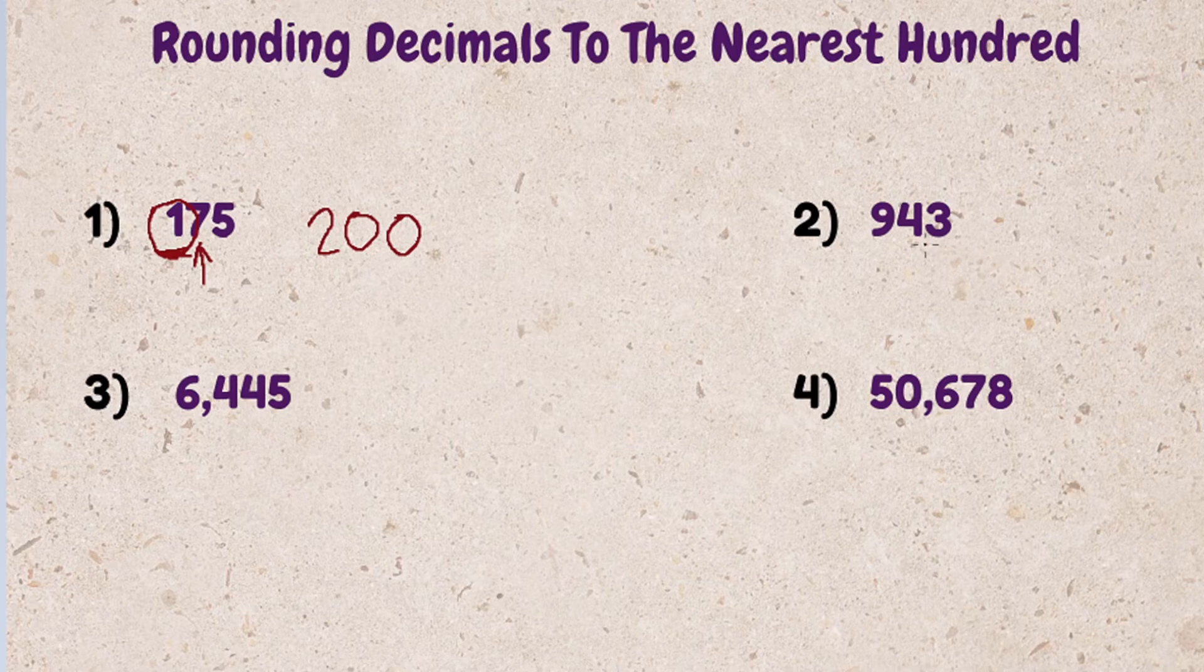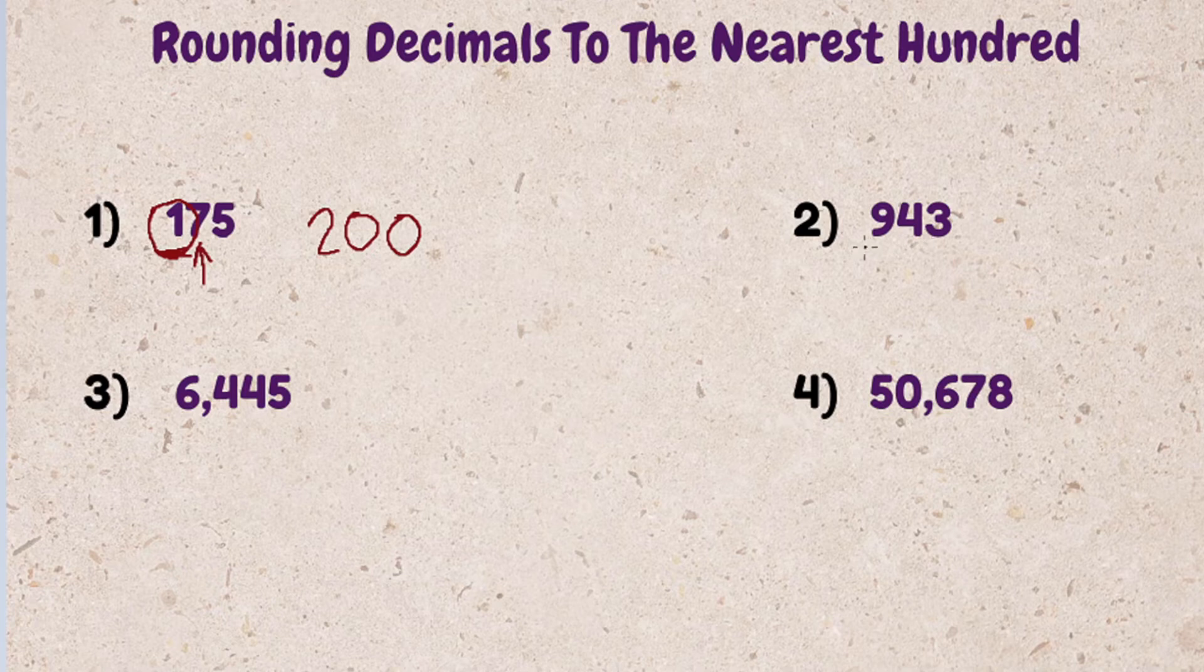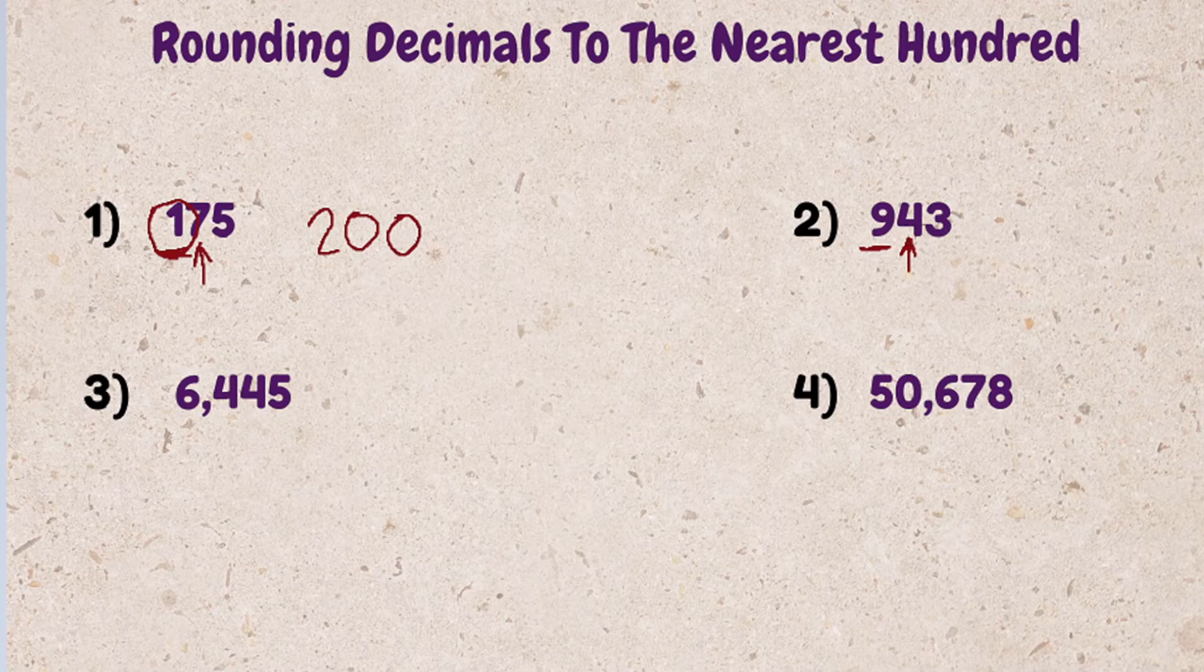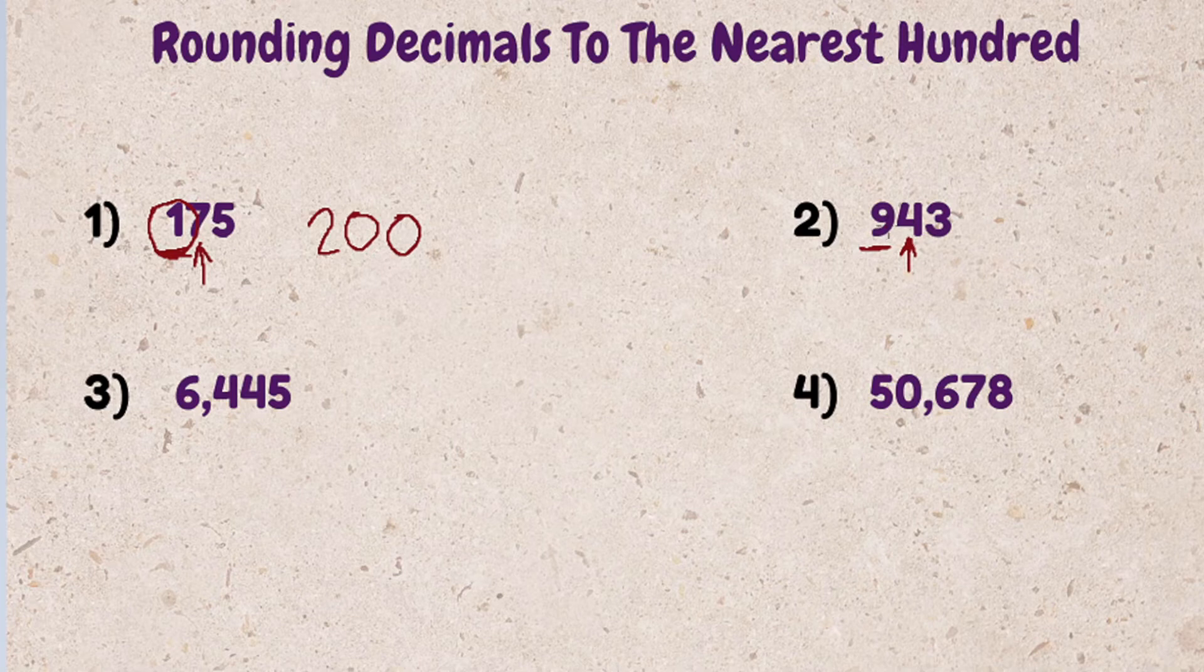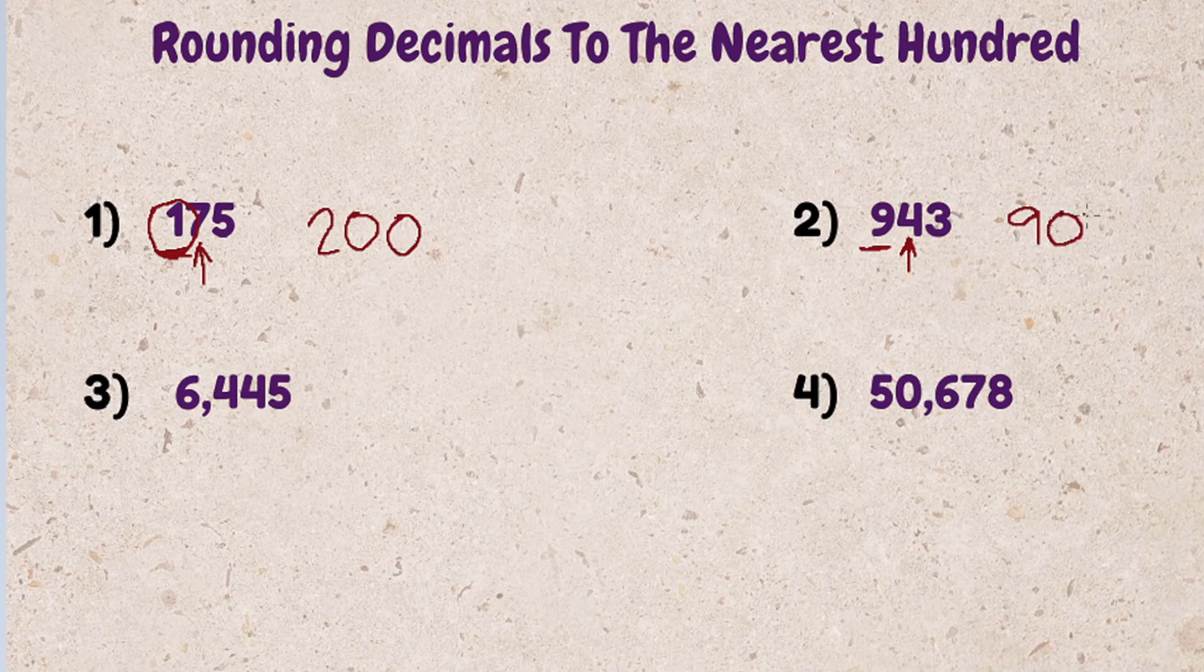Example 2. Round 943 to the nearest hundred. 9 is in our hundred spot. 4 is in our tens. 4 or less we round down, which pretty much just means you keep this number the same. So 943 rounds to the nearest hundred, 900.